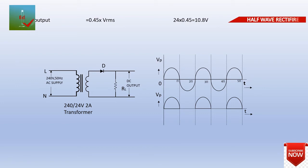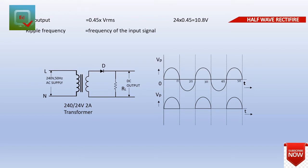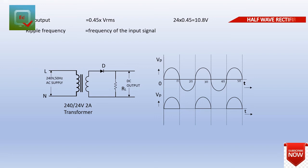The first factor is ripple frequency. That's the input sine wave, and that's the output — the small DC load. That's the frequency of the output. That's the ripple frequency. In the frequency, we will see the graph.